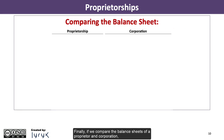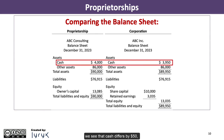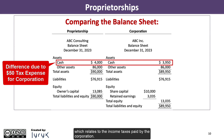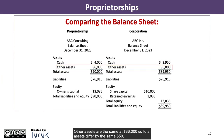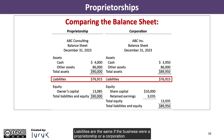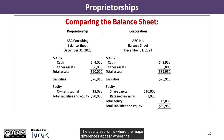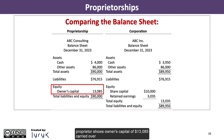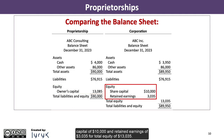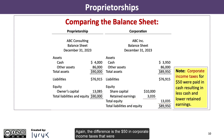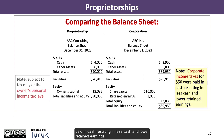Finally, if we compare the balance sheets of a proprietorship and corporation, we see that cash differs by $50, which relates to the income taxes paid by the corporation. Other assets are the same at $86,000, so total assets differ by the same $50. Liabilities are the same. The equity section shows the major differences: the proprietorship shows owner's capital of $13,085, whereas the corporation shows share capital of $10,000 and retained earnings of $3,035 for total equity of $13,035. The difference is the $50 in corporate income taxes paid in cash, resulting in less cash and lower retained earnings. The proprietorship is subject to tax only at the owner's personal income tax level.